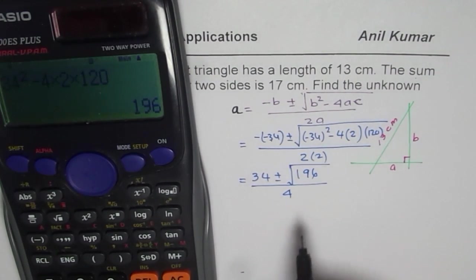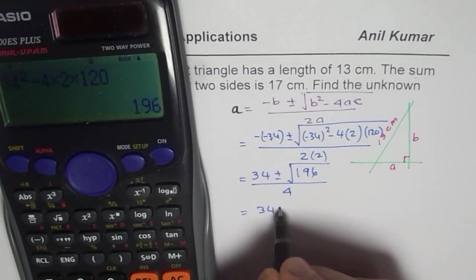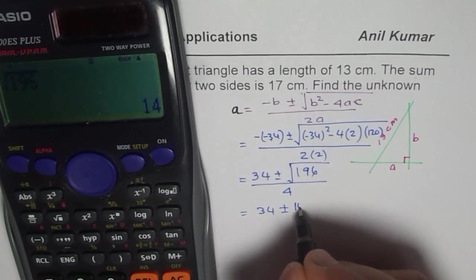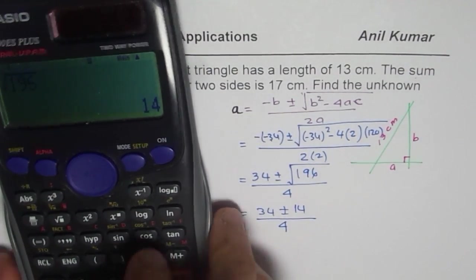So square root of 196 divided by 2 times 2 is 4. Now, this could be written as 34 plus minus square root of 196 is equals to 14 divided by 4.